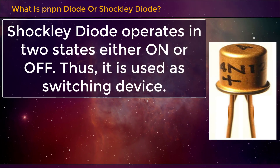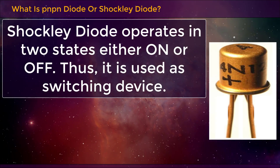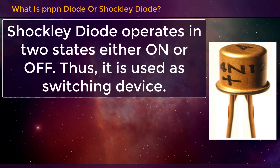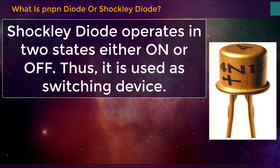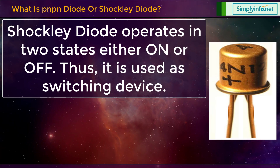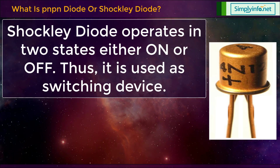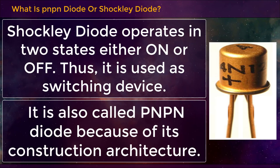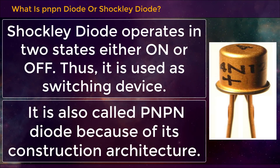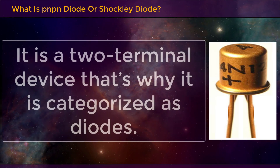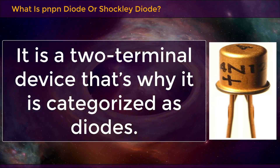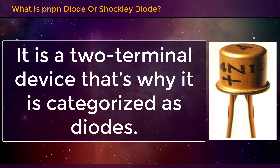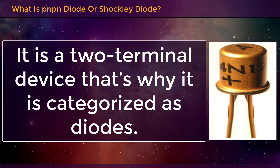Shockley Diode operates in two states — either on or off. Thus, it is used as a switching device. It is also called PN-PN Diode because of its construction architecture. It is a two-terminal device, and that's why it is categorized as a diode.